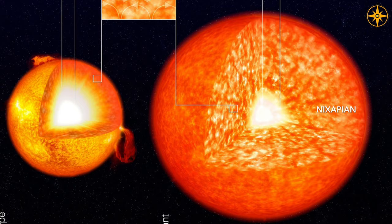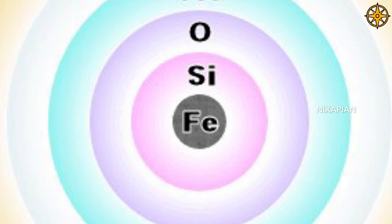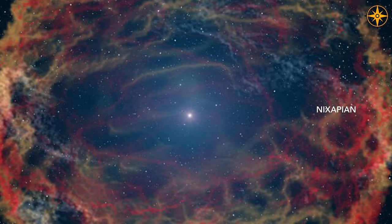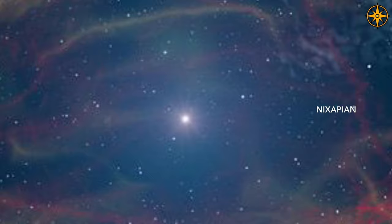The fusion process to generate iron doesn't generate any energy. Iron builds up at the center of the star until it reaches a critical amount. The balance between radiation and gravity is broken, therefore the core collapses and the star implodes.